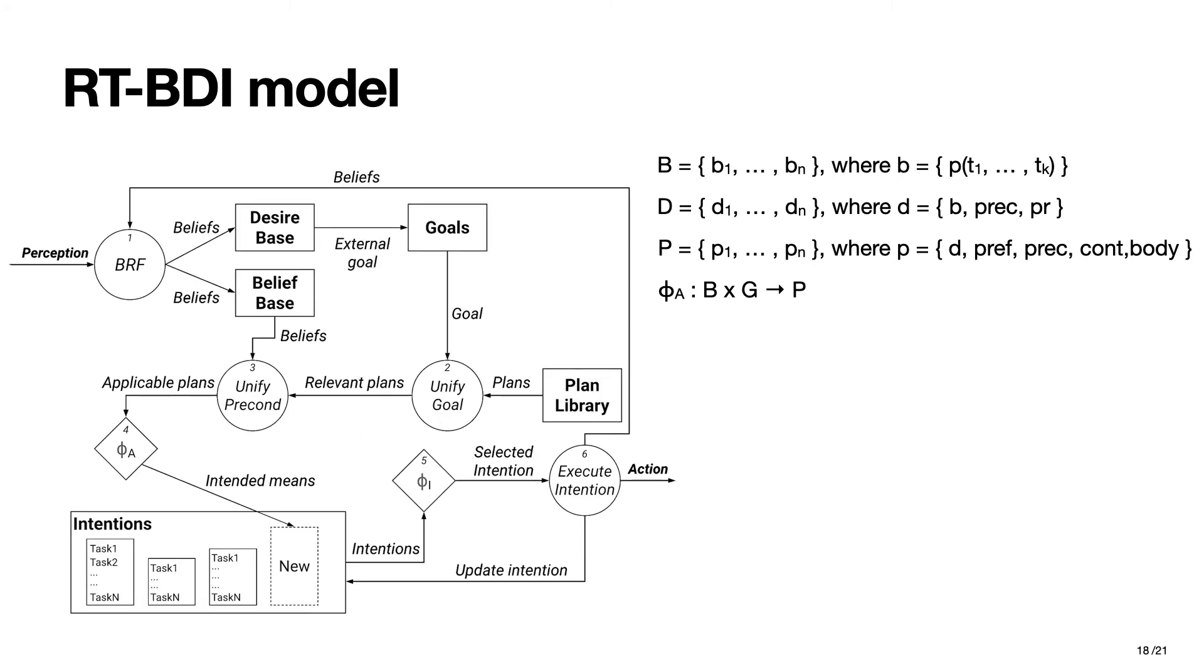Once an agent has committed to an intention through the selection function phi-sub-A, it is added to the intention set. Then, phi-sub-I, which selects the intention whose task has to be executed at the next cycle, implements the EDF scheduling algorithm. This approach differs, for instance, from Jason, which implements a hierarchical round-robin as the default intention selection function, and Jack, which allows choosing between round-robin and FIFO.